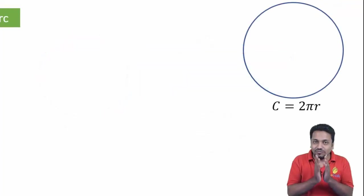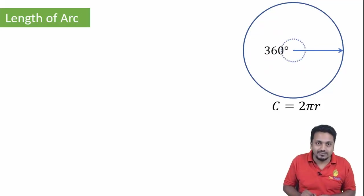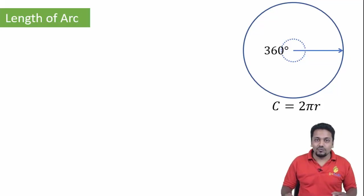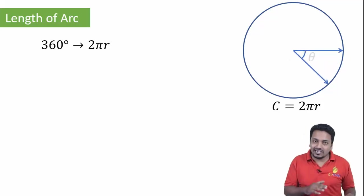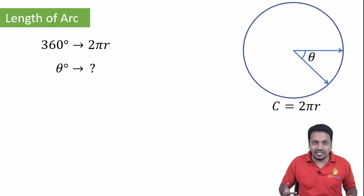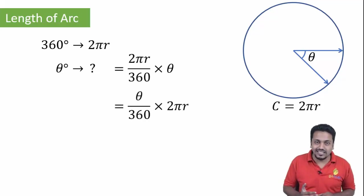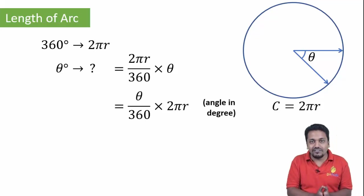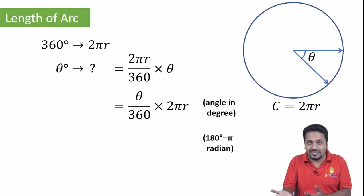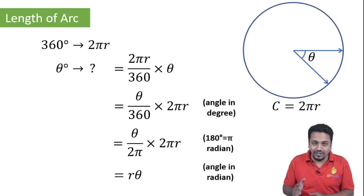Next is the length of arc. Take the radius of a circle and rotate it to cover a complete angle at the center. The angle at the center is 360 degrees and the arc made is one full circle, so for central angle 360 degrees the arc length is 2 Pi r. When the central angle is theta, using a unitary method the arc length is theta upon 360 times 2 Pi r. If the angle is given in radians, since 360 degrees equals 2 Pi radians, the length of arc simplifies to r theta.